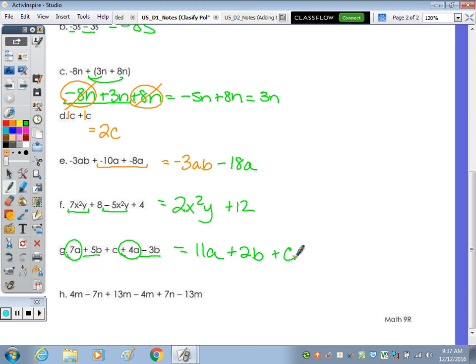And at the end, I will also combine in alphabetical order. M's before n. I see 4m and a negative 4m. So those would cancel. And then a positive 13m and a negative 13m. Those would cancel. And then last for n's, a negative 7n and a positive 7n cancel. So if everything cancels out, or it's the additive inverse, the answer is 0.